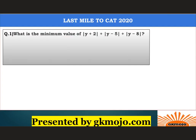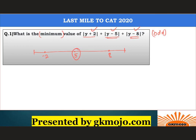First question: what is the minimum value of |y + 2| + |y − 5| + |y − 8|? This type of question is often seen in the CAT examination. There is a conventional method and an unconventional shortcut. If I draw a number line, to represent |y + 2| I place −2, for |y − 5| I place 5, and for |y − 8| I place 8. Whenever the minimum value is asked and the number of modulus terms is odd, the centermost value is the one you substitute for y.